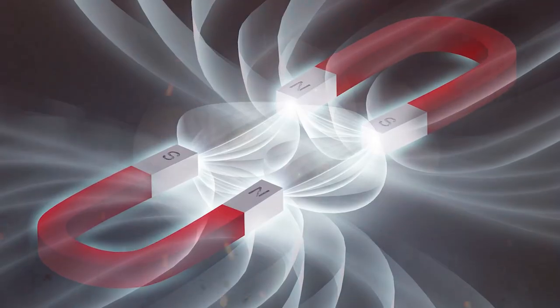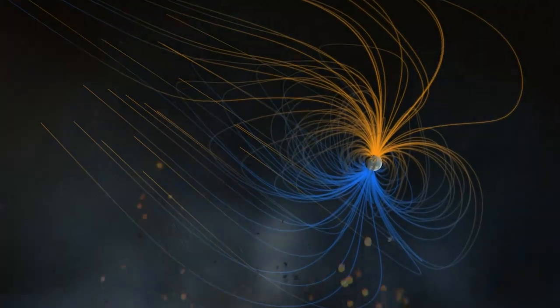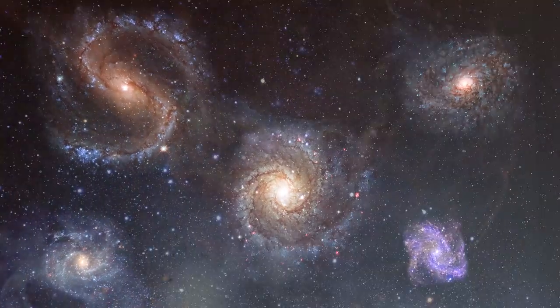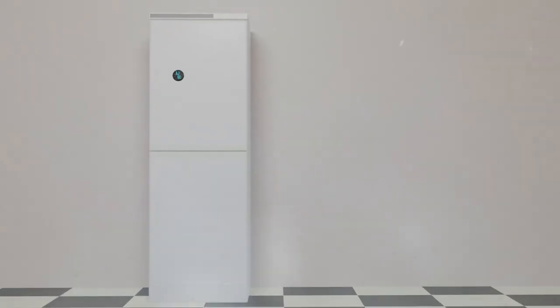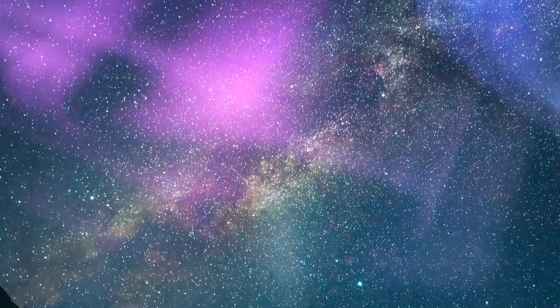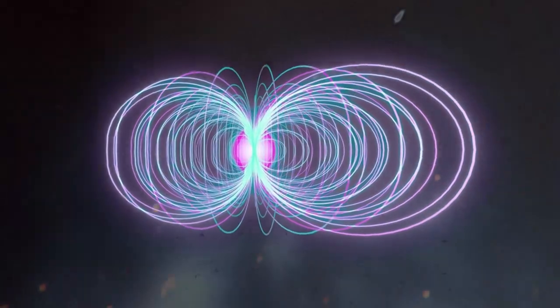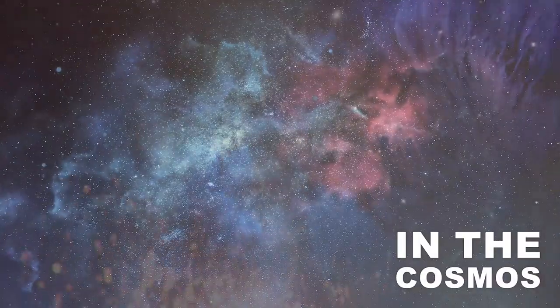Magnetars don't play around when it comes to magnetism. They are the most powerful magnetic entities found in the universe as we know it. Imagine a magnet so powerful that it makes your average fridge magnet look like a mere speck in the magnetic universe. We are talking about magnetars, the undisputed champions of magnetism in the cosmos.